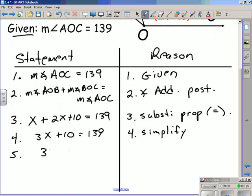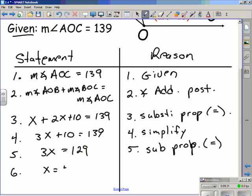Statement number 5 will be 3x is equal to 129. What allowed us to do that was to subtract 10 from both sides and that would be the subtraction property of equality. Our final statement is x is equal to 43. And we eliminated the times 3 by dividing both sides by 3 and that would be the division property of equality.